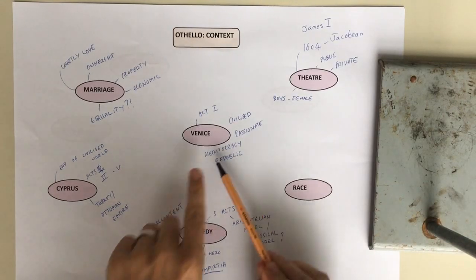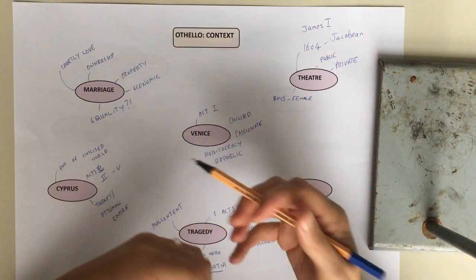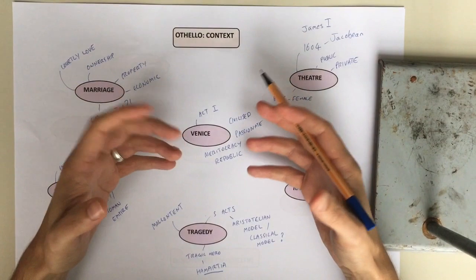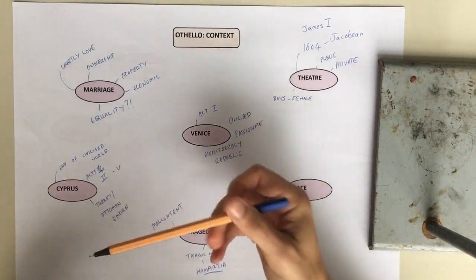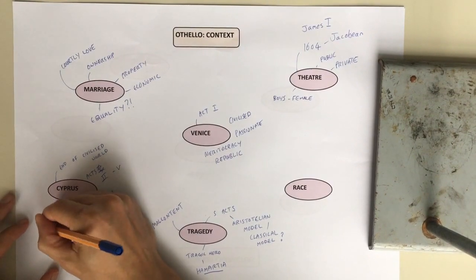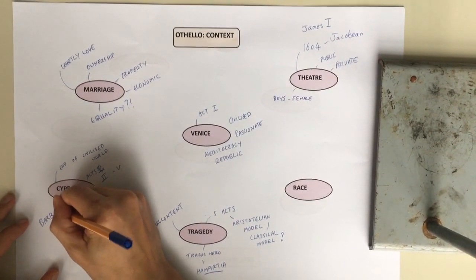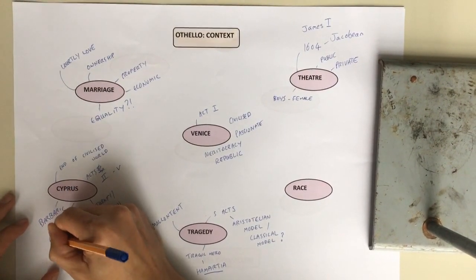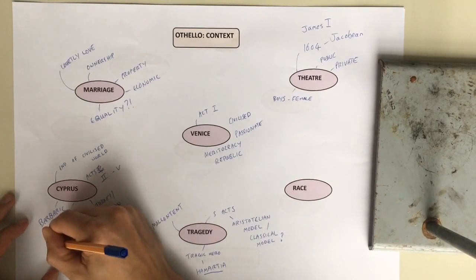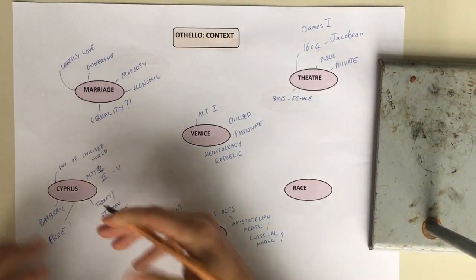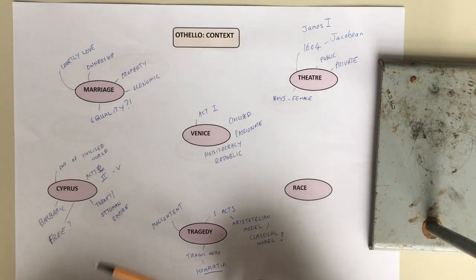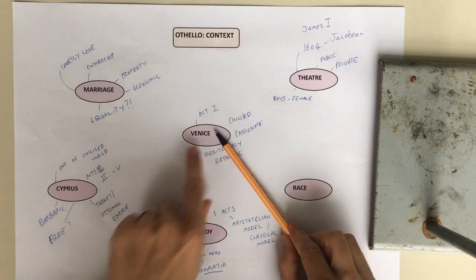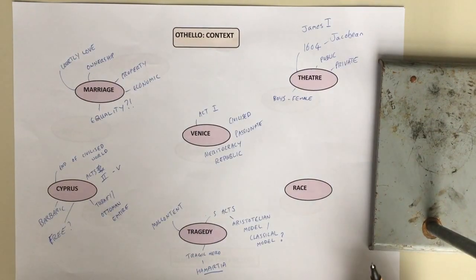But what's really important is that Venice is this civilised, romanticised, more meritocratic society, whereas Cyprus is seen as this almost barbaric but weirdly at the same time quite free place. So you're more free to do what you want. You're less constrained by the rules of civilisation when you go to Cyprus.